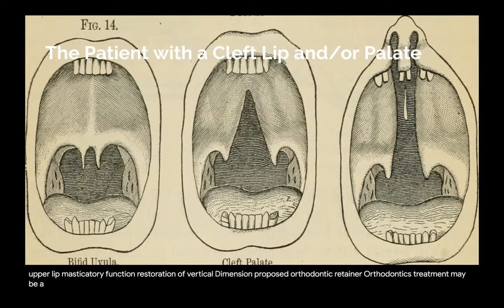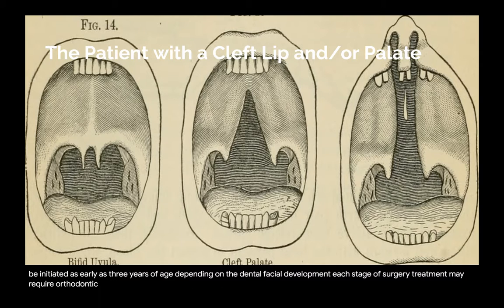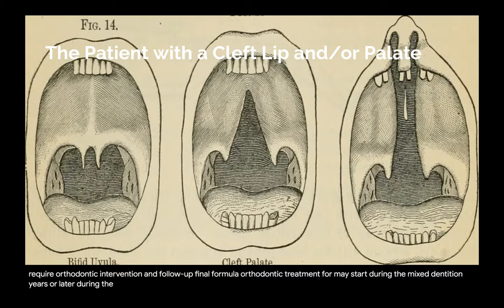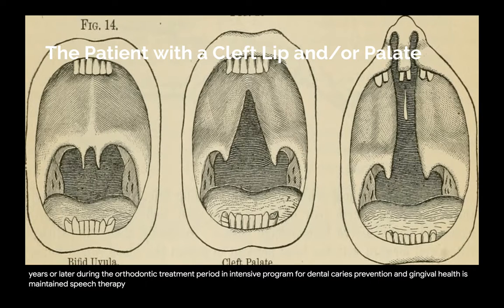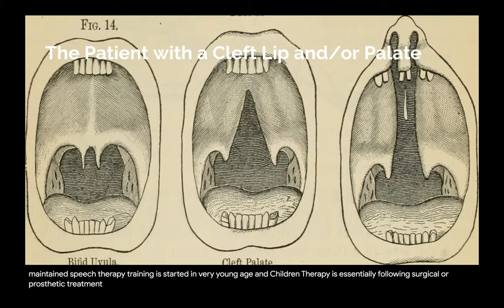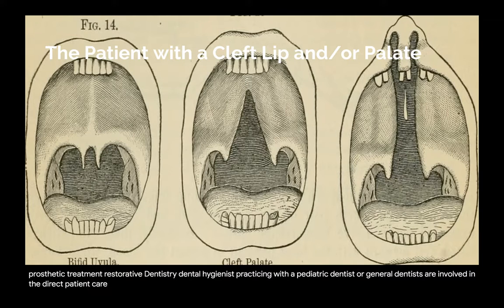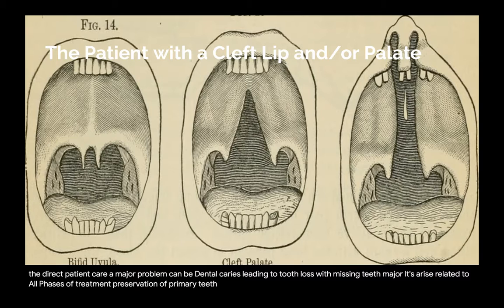Orthodontics: treatment may be initiated as early as three years of age depending on dental facial development. Each stage of surgical treatment may require orthodontic intervention and follow-up. Final orthodontic treatment for realigning the teeth and gaining a functional occlusion may start during the mixed dentition years or later. During orthodontic treatment, an intensive program for dental caries prevention and gingival health is maintained. Speech therapy training is started in very young children, and therapy is essential following surgical or prosthodontic treatment. Restorative dentistry: a major problem can be dental caries leading to tooth loss. With missing teeth, major difficulties arise related to all phases of treatment, and preservation of primary teeth has special significance.